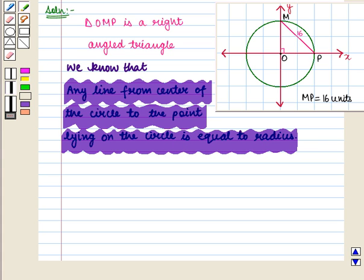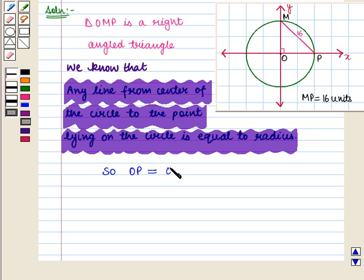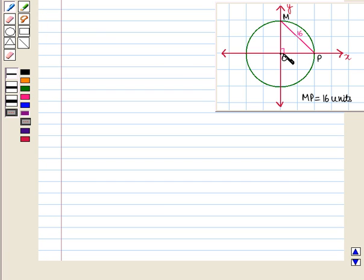So here OP and OM are equal and both are the radii of this circle. Also triangle OMP is a right-angled triangle, right-angled at point O.